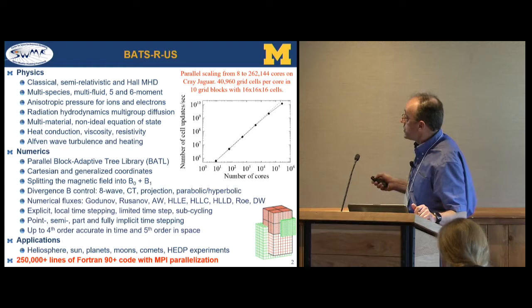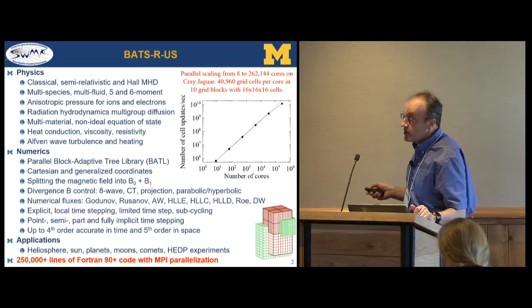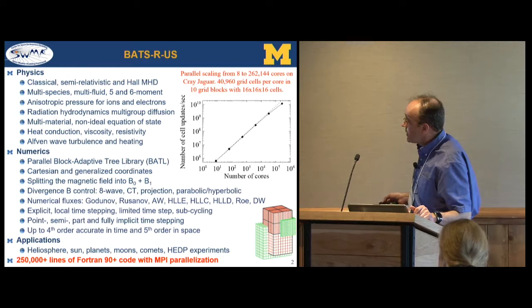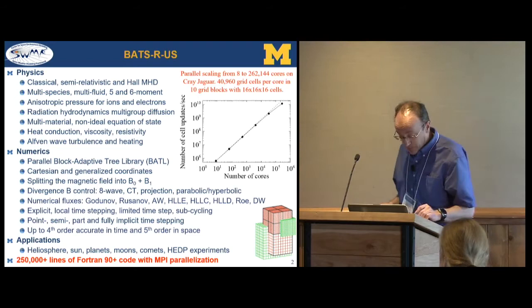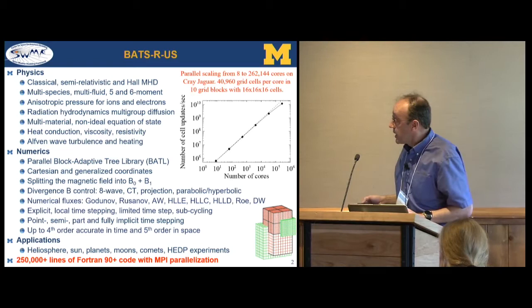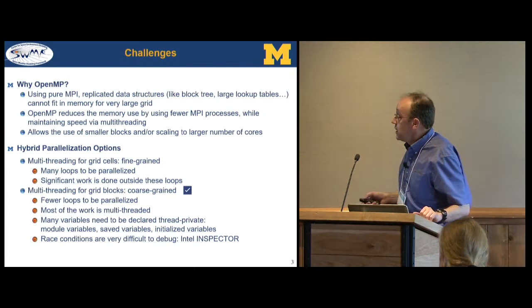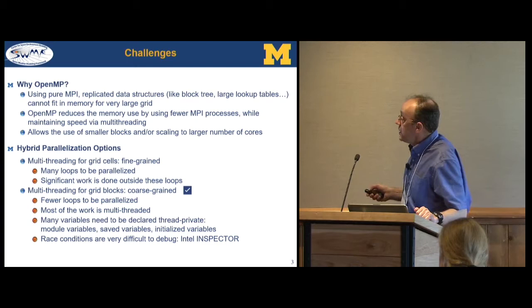To achieve scaling up to about 260,000 cores, we have to use really large blocks, and I will explain why. This is a code used for many different applications — mostly space physics, but also high-energy density plasma physics — and it's about 250,000 lines of Fortran with MPI. So we've been worried about how much work it would be to add anything substantial to the parallelization.